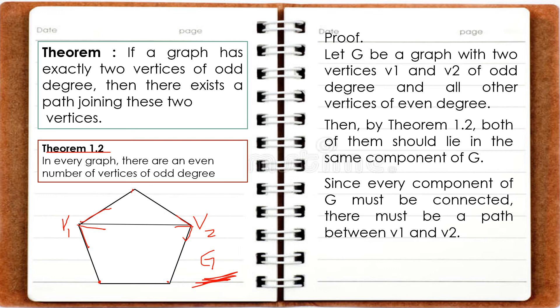Therefore, in this case, we have a path between V1 and V2. Hence, if a graph has exactly two vertices of odd degree, then there exists a path joining these two vertices. And that ends our proof. Thank you.